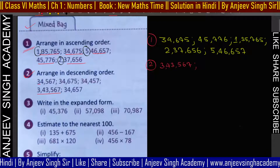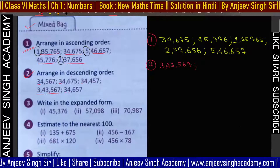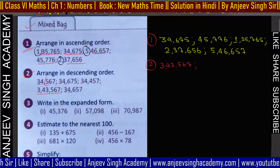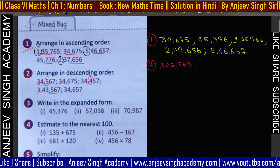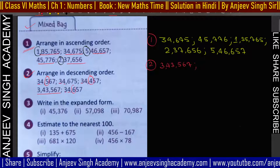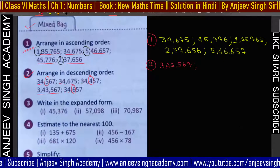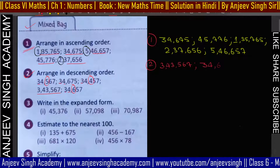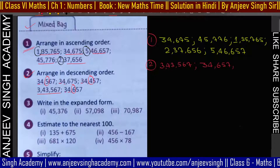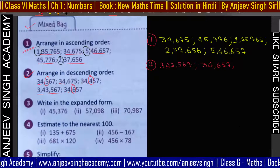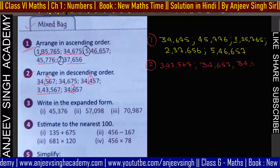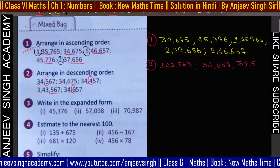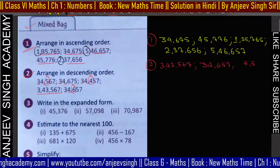बाकी सबके पास 5 digits हैं। पहले वाले value को देखते हैं — सबका 3 है, दूसरा भी सबके पास 4 है। तीसरे के basis पर decide करेंगे: यहाँ पे 5 है, यहाँ पे 4 है, यहाँ पे 6 है — तो यह bigger value हो गया। तो हम इसको लिखेंगे 3,4,6,5,7। उसके बाद next value 3,4,6,5,7।